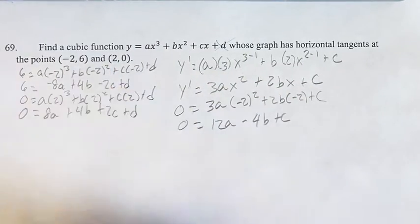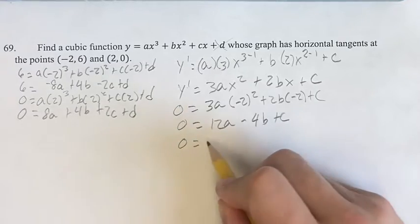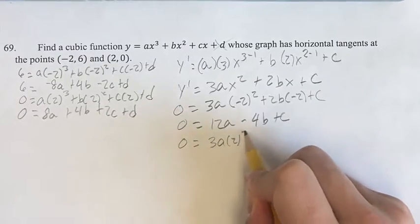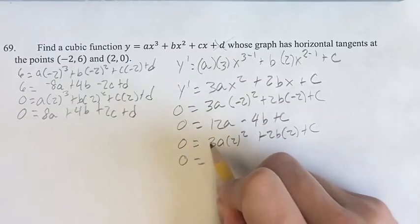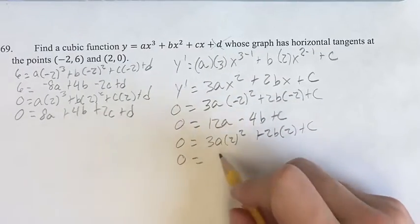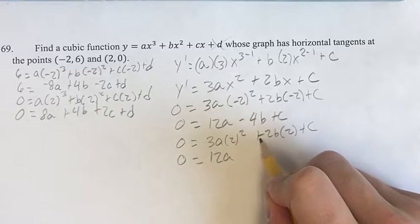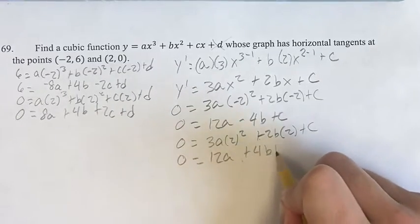We're also told that it's equal to 0 when x equals 2. So 0 equals 3a times 2 squared, plus 2b times 2, plus c, which gives us 0 equals 3 times 2 squared is 3 times 4 is 12a, plus 2 times 2 is plus 4b, plus c.